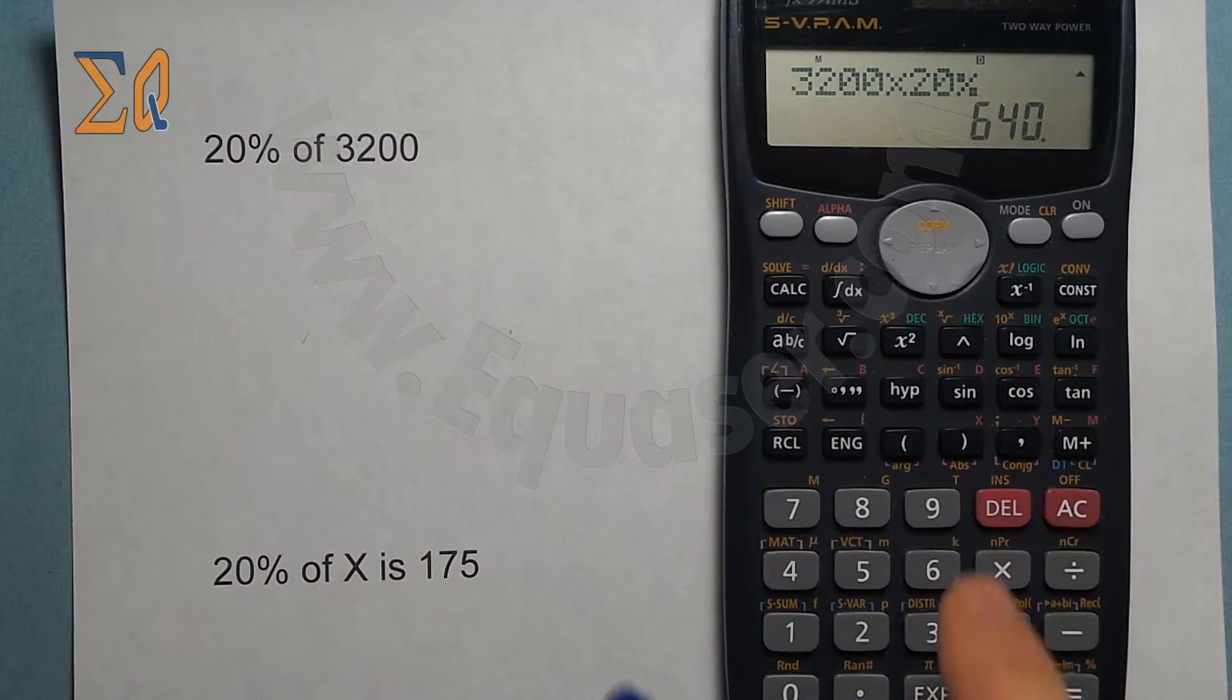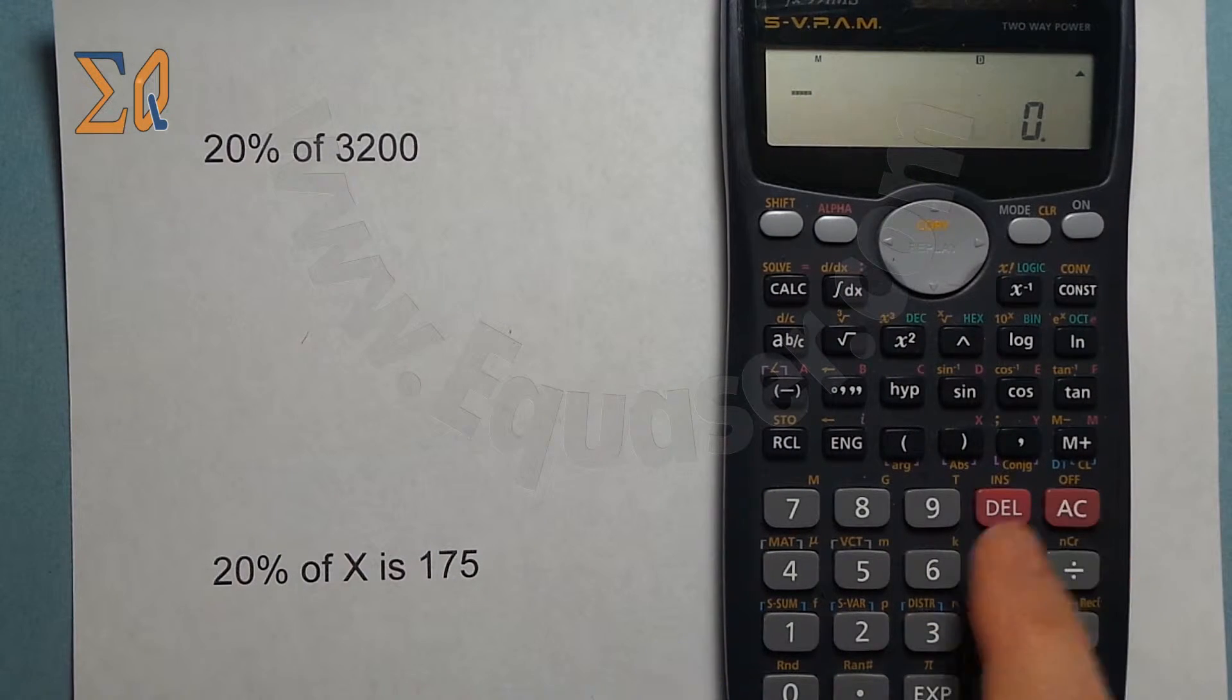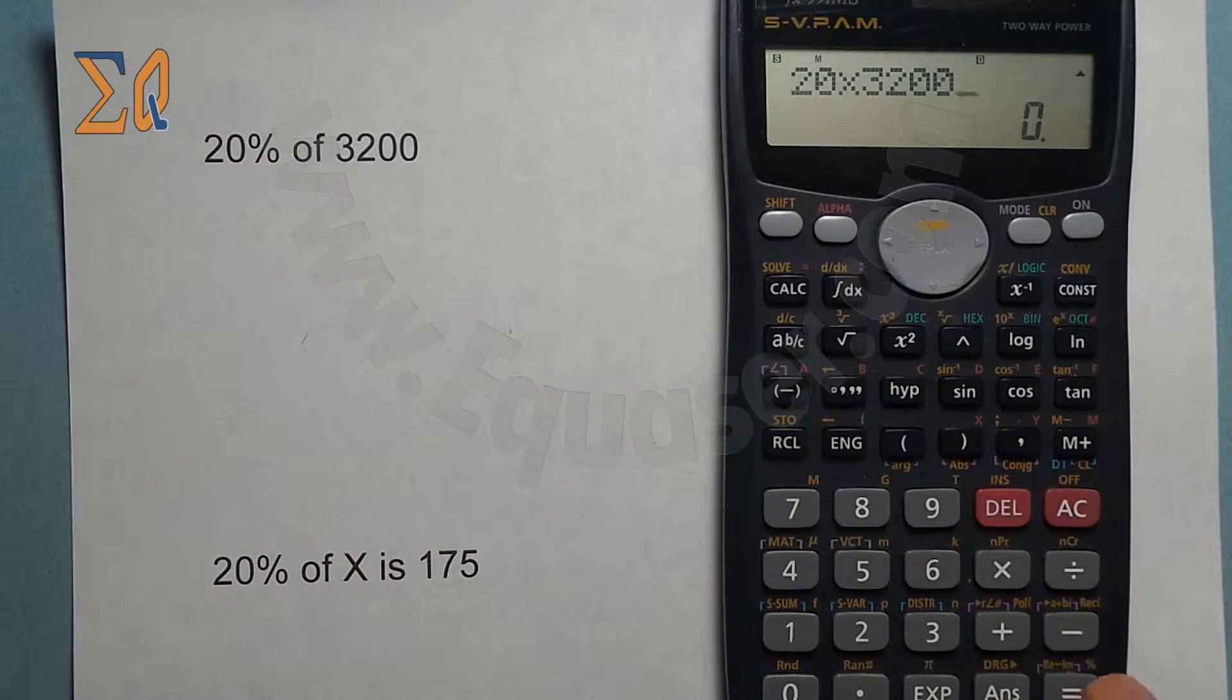Even if you do it in reverse it will work. So 20 times 3200, shift and then percent. This will apply in every calculator, so regardless where the percentage is, it will work. 640 in both cases.